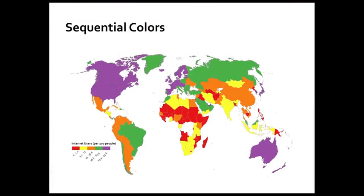Let's start with a bad example so you never do this when you make a map. This is a sequential set of data showing internet users per 100 people per country — less to more per country. But I've applied a qualitative color scheme just to throw you off. A lot of people do this because they don't know any better. Why would purple be more than green, which is more than orange, which is more than yellow, then red? You can kind of learn to read this map, but it's very hard to pick out right away which places are high and which are low, or what's the average. You really have to study it.